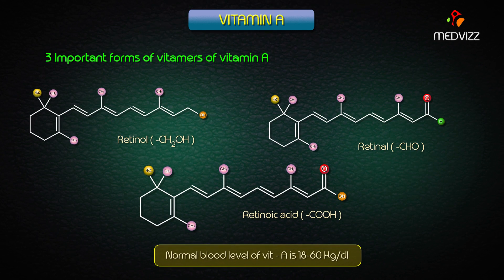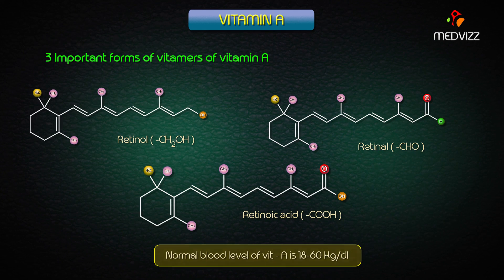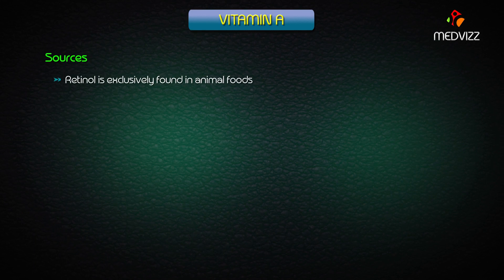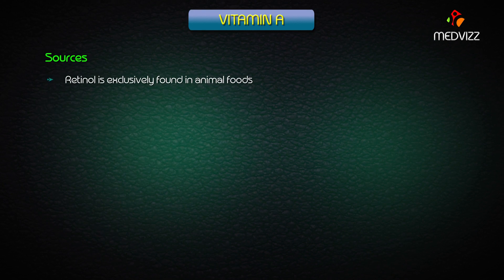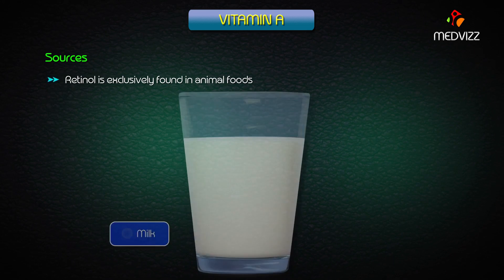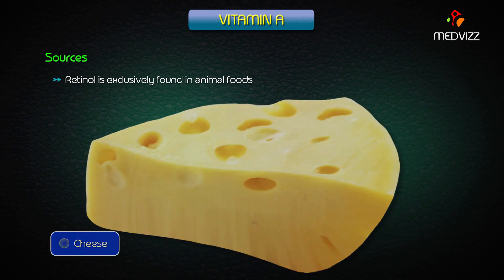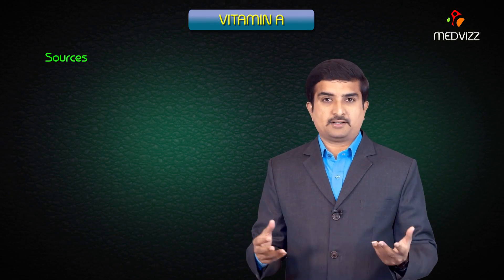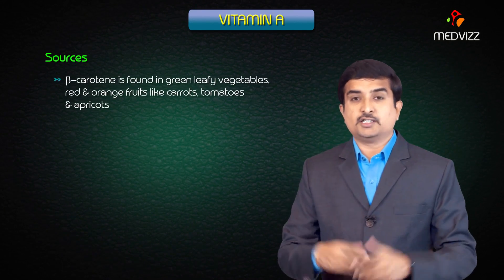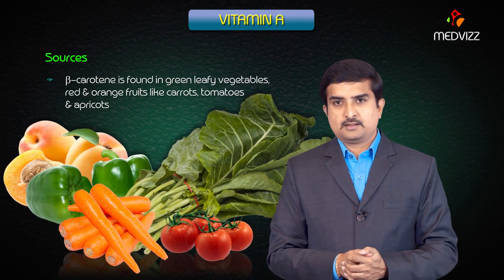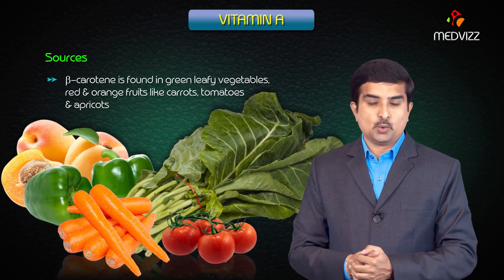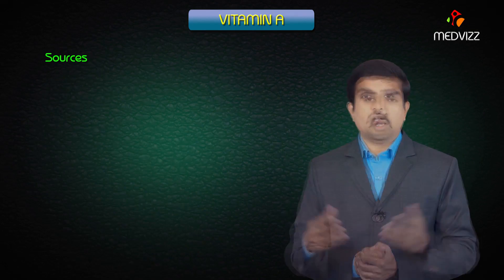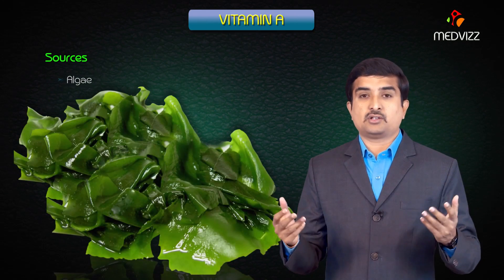The normal blood levels of vitamin A are approximately 18 to 60 micrograms per deciliter. Retinol, the alcoholic form, is exclusively found in animal foods such as milk, cheese, butter, and oily fish. From plants, beta-carotene is found in green leafy vegetables and red and orange fruits — examples include carrots, tomatoes, apricots — and also in algae.